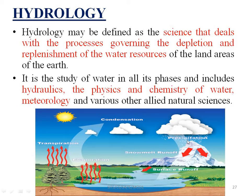Precipitation means rainfall or snow. Then the water will come to the land, sea, and ocean — this is a cycle process. Hydrology is the study of water in all its phases and includes hydraulics, the physics and chemistry of water, meteorology, and various other natural sciences.